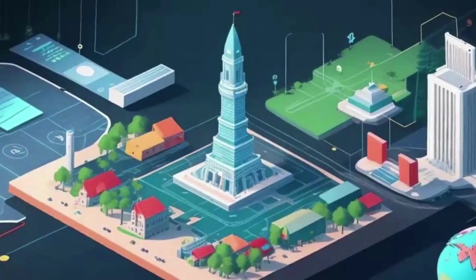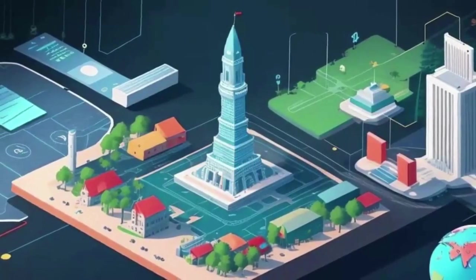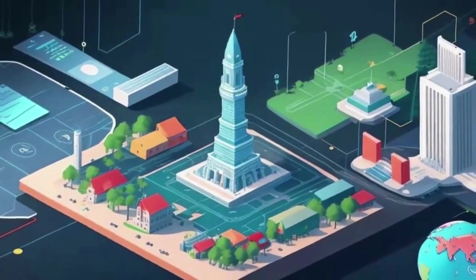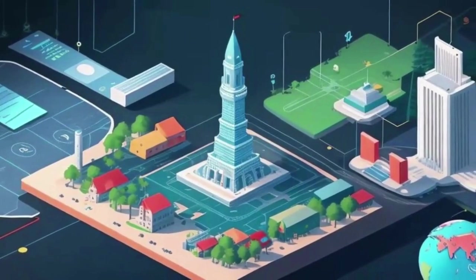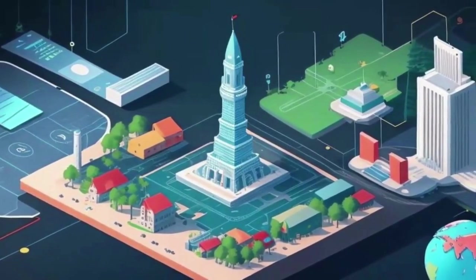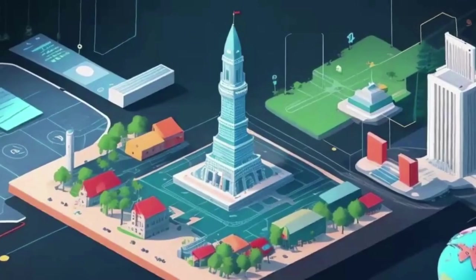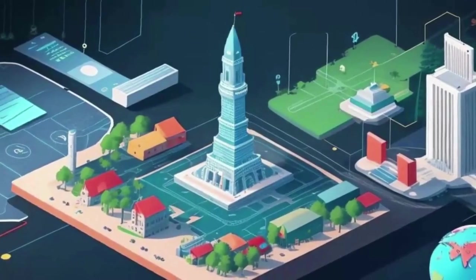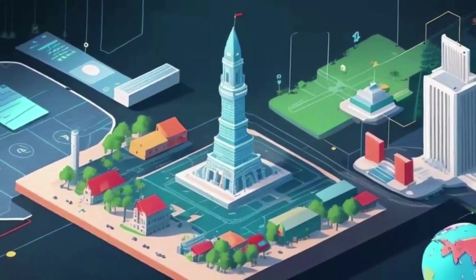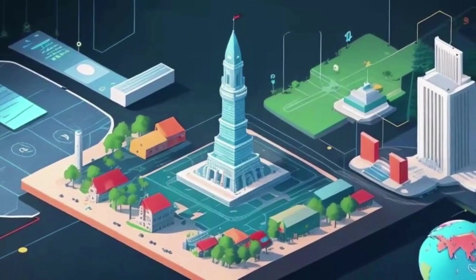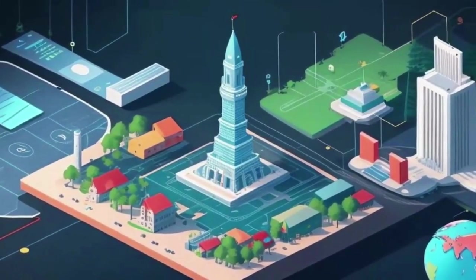Moreover, governments are implementing AI strategies to bolster their competitive advantage in the global AI landscape. These strategies often involve collaboration between government agencies, academia, and the private sector. They seek to create an ecosystem conducive to AI innovation, such as establishing AI research centers, providing incentives for AI-related businesses, and facilitating data sharing.